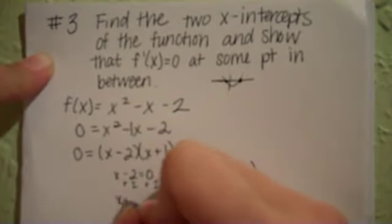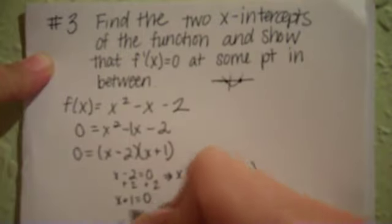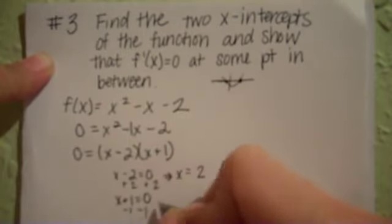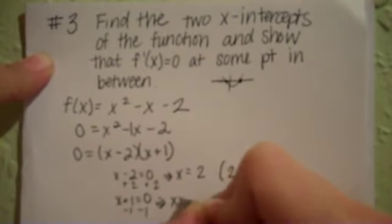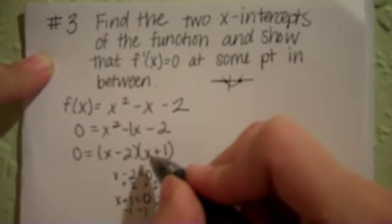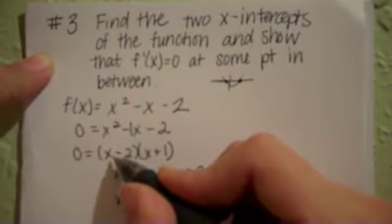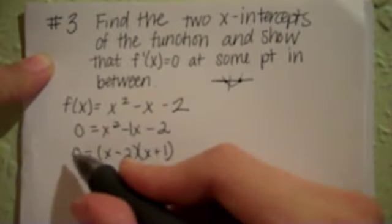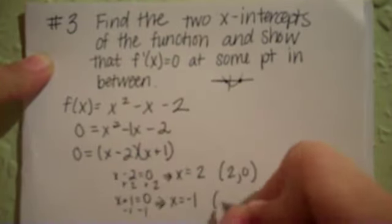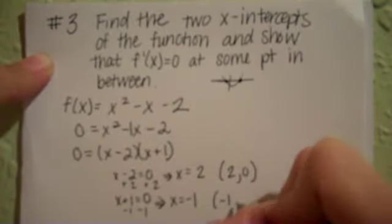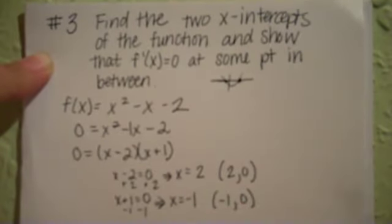Also, if this factor right here, x plus 1, is equal to 0, solve for that. When x is equal to negative 1, and you can see it, negative 1 plus 1 would be 0. 0 times anything, this would happen to be negative 3, but 0 times negative 3 would equal 0. So, negative 1 would also make this statement true.